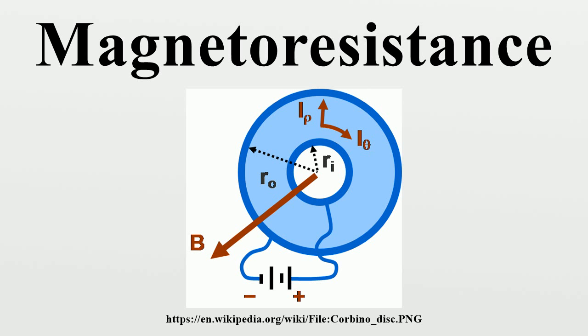William Thomson first discovered ordinary magnetoresistance in 1856. He experimented with pieces of iron and discovered that the resistance increases when the current is in the same direction as the magnetic force and decreases when the current is at 90 degrees to the magnetic force.